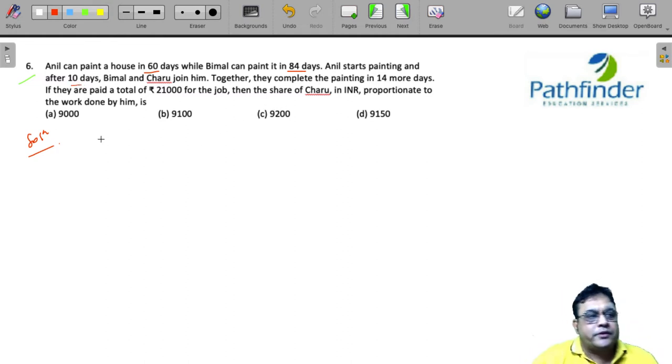The first thing you need to know is, in the first 10 days, work done by Anil in first 10 days. Now, this is all happening orally. It is going to be 1 by 6, that is 10 by 60 is 1 by 6.